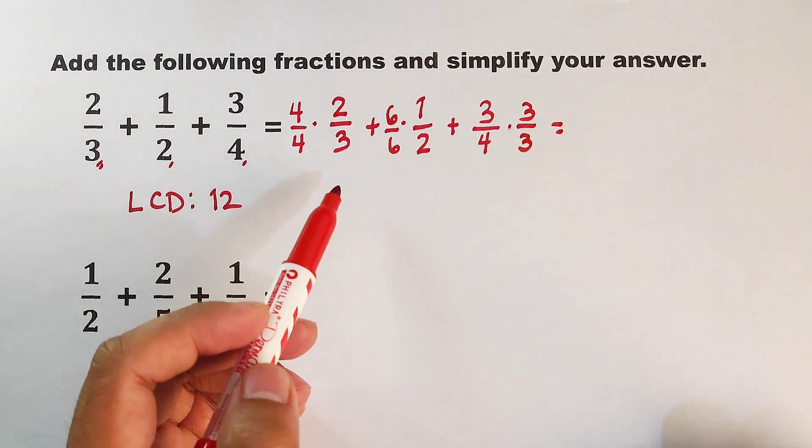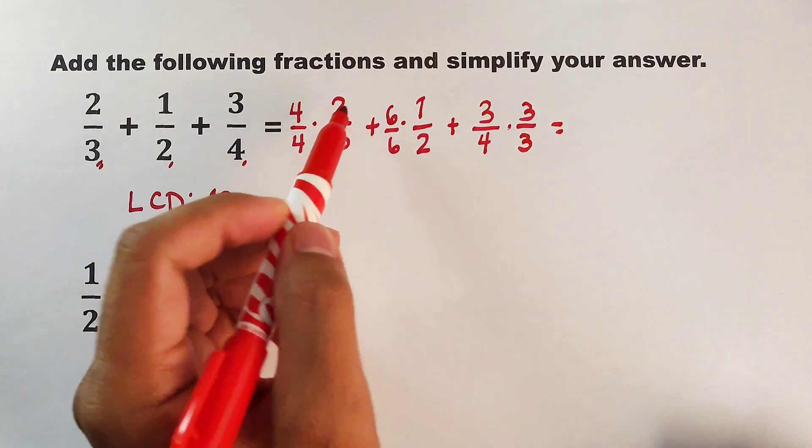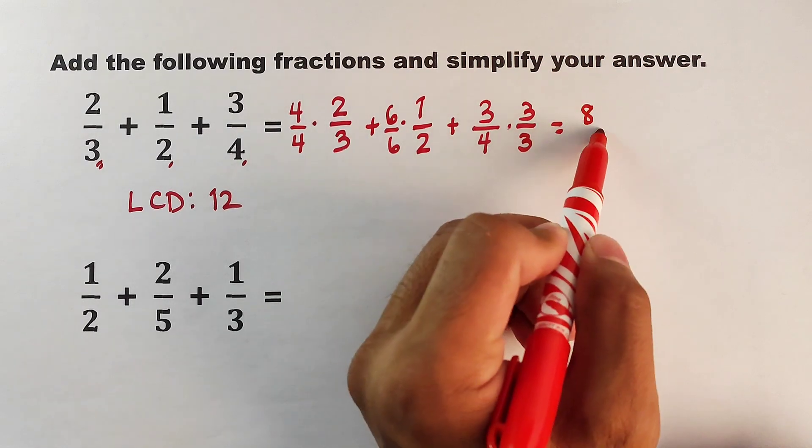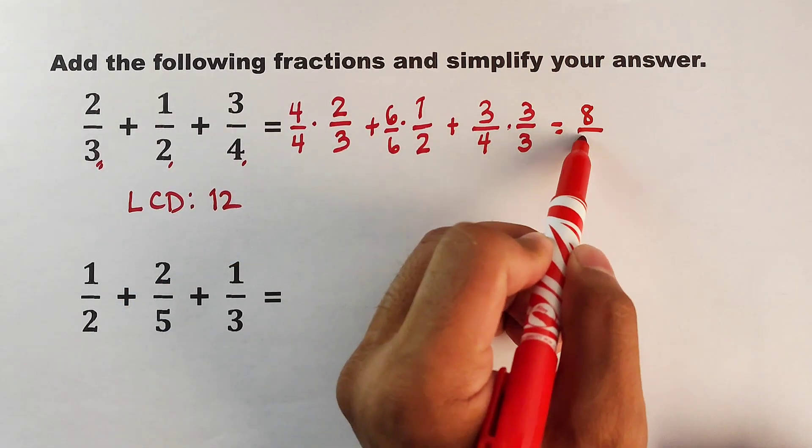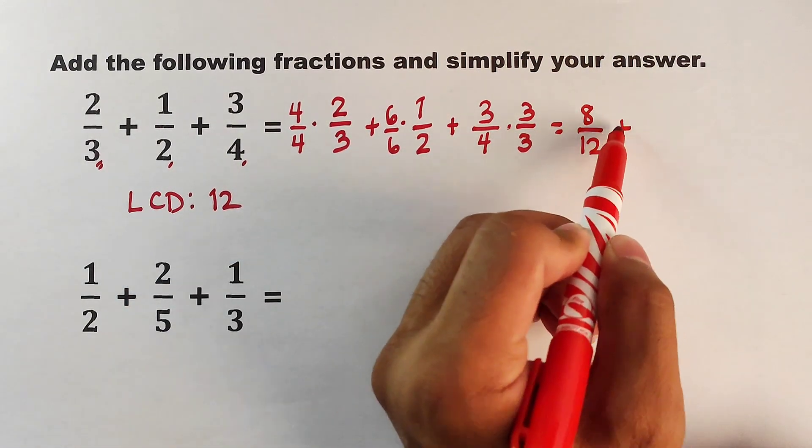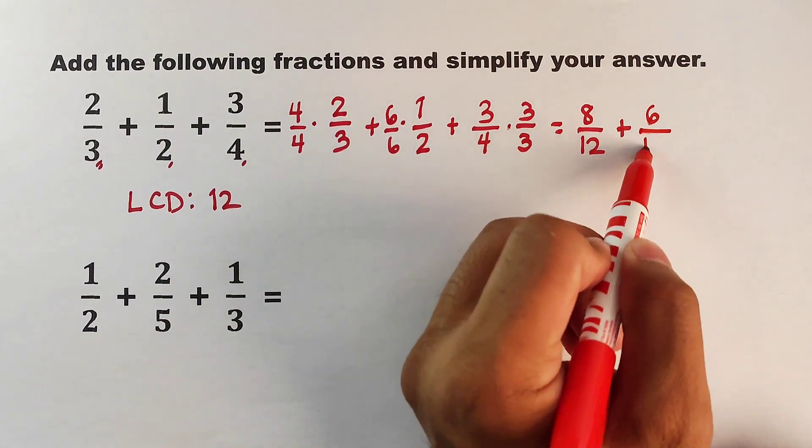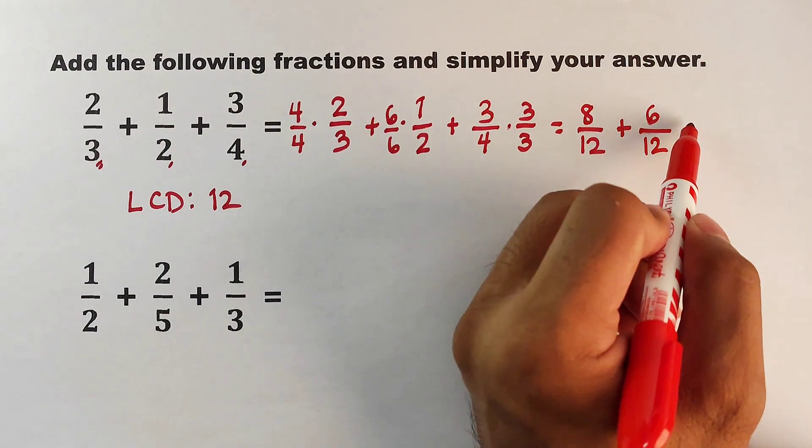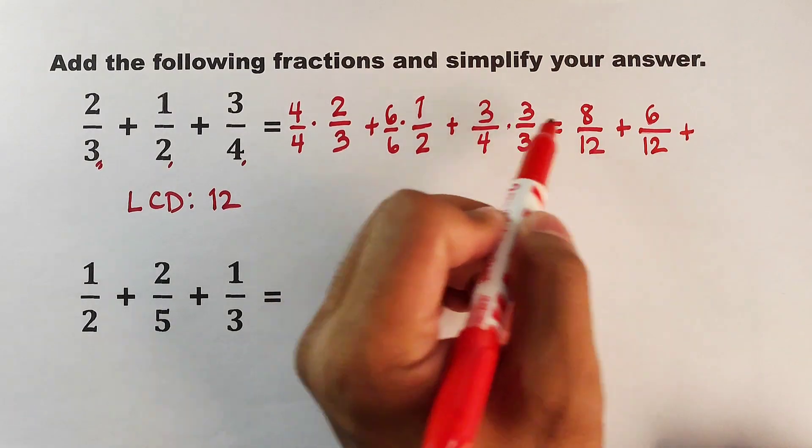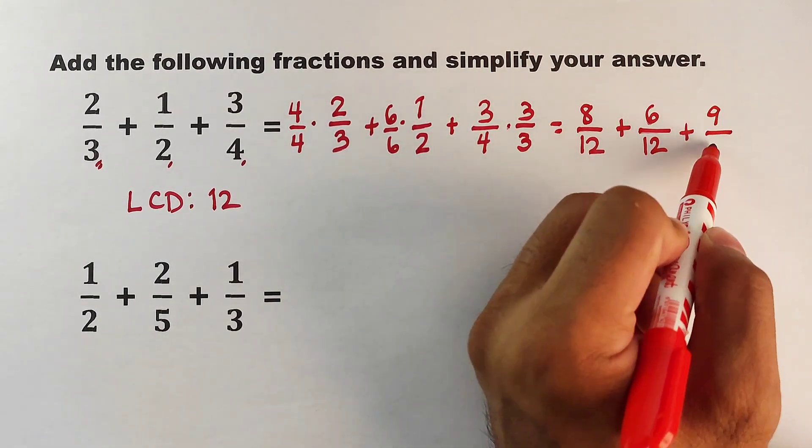And this time let's simplify. 4 times 2, that is 8 over 12. Plus 6 times 1, that is 6 over 12. Plus 3 times 3, that is 9 over 12.